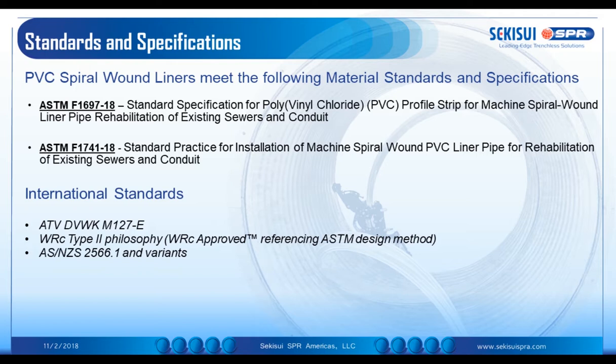Additionally, there's the WRC Type II philosophy, which is for a stand-alone, unbonded structural liner. These products are WRC approved, and those approvals reference the ASTM design methods, as the WRC sewer rehabilitation manual — the SRM — does not actually provide a method standard for design with profiled wall pipes.